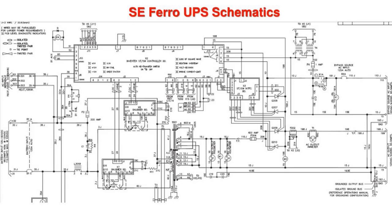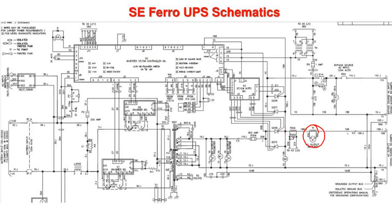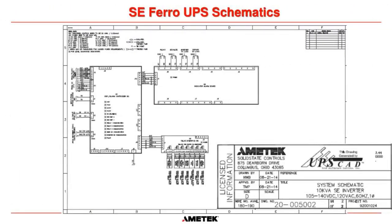We have another fan for the static switch section. T202 is a CT connected to the output of the system that monitors output current and feeds back to the inverter control board at connector X2J5. The UPS performs actions depending on how much current is flowing. We have our output ammeter and then the load output terminals.